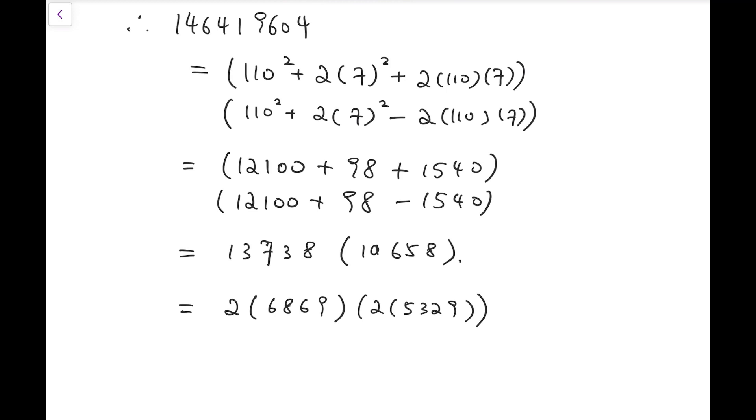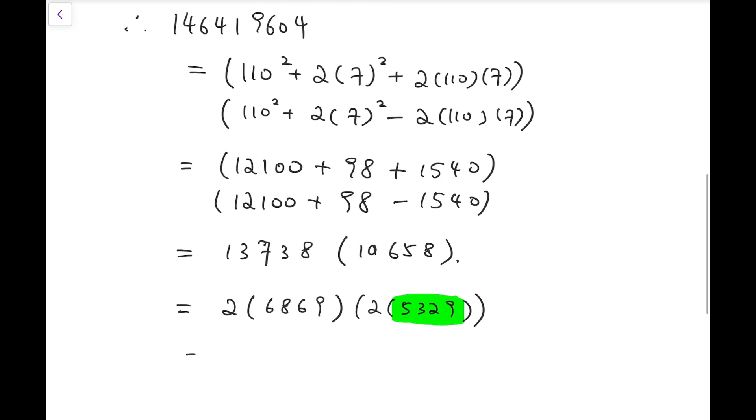Now, no more even factors, so we try to factorize them in different ways. Firstly, notice that 5329 is actually 73 squared. If you manage to remember values of squares, then you can quickly settle the green number. And what remains will be 6869.